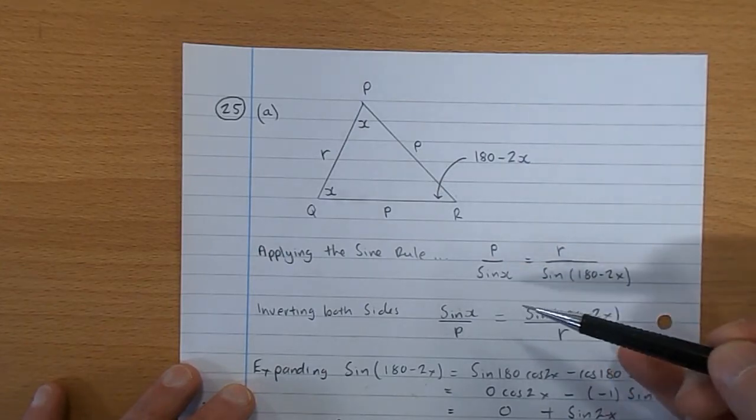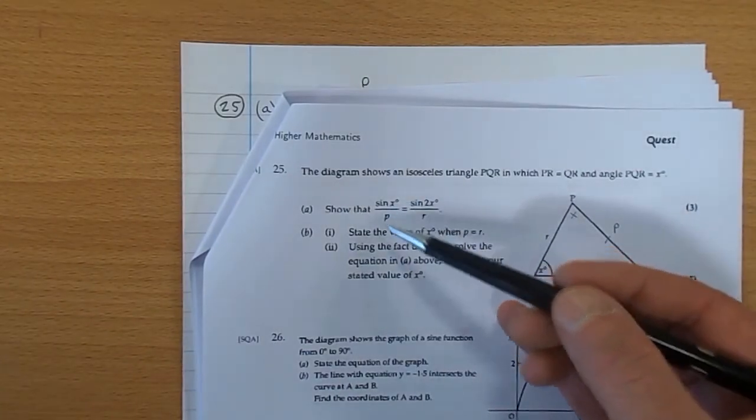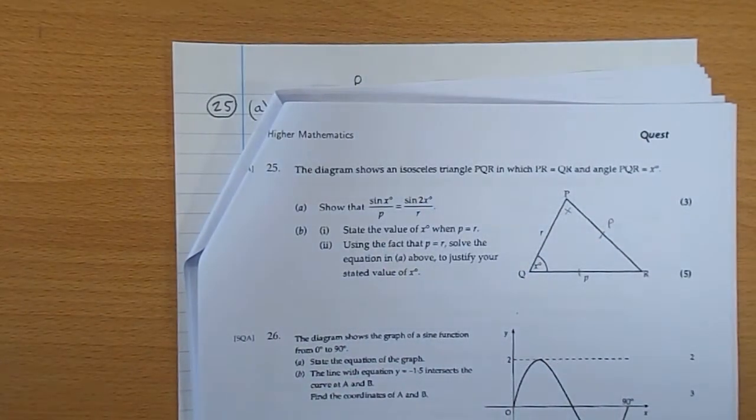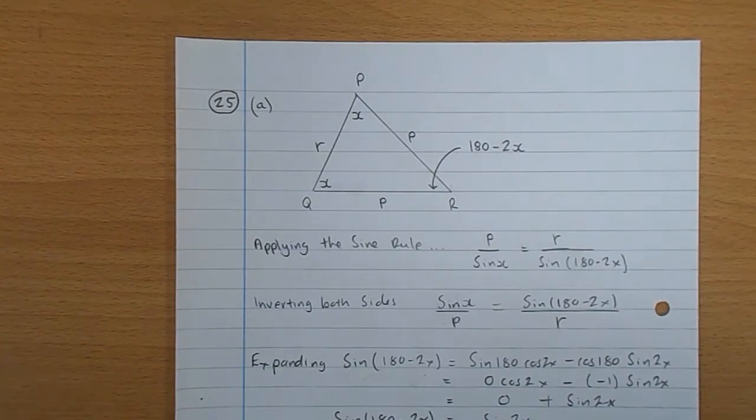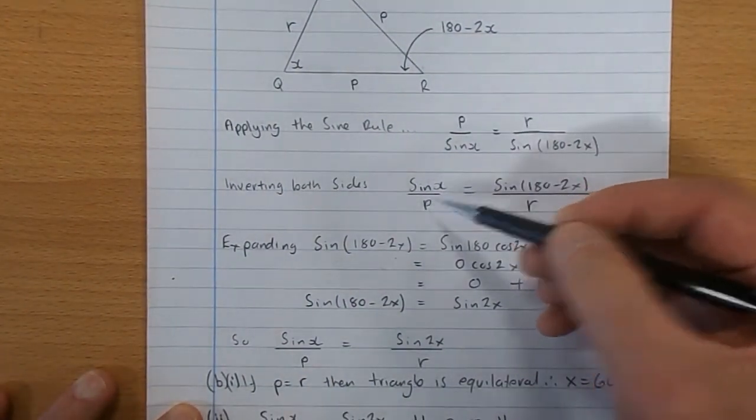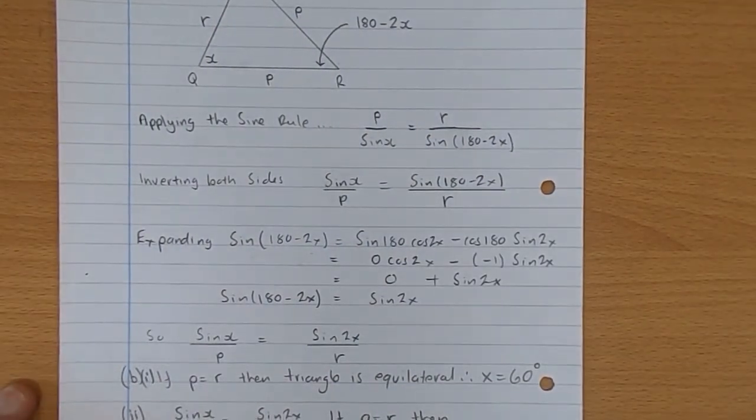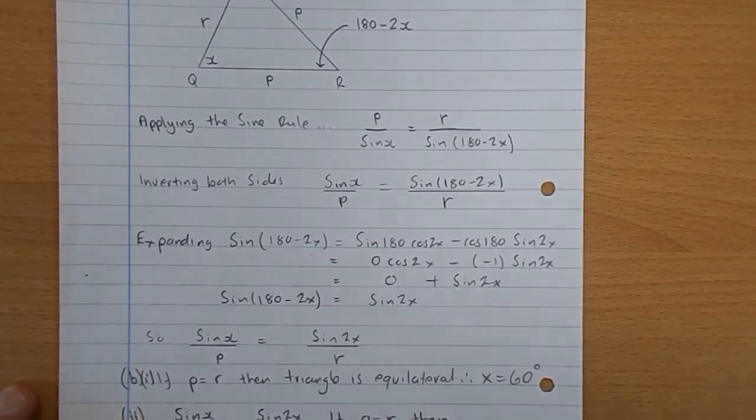So we've now introduced the letter P, this letter sine X, the letter R, and you can see us getting closer and closer to what they want there. Invert both sides, that's mathematically fine. Sine X over P is sine 180 take 2X over R. That's perfectly acceptable.